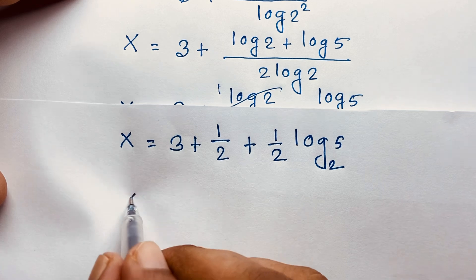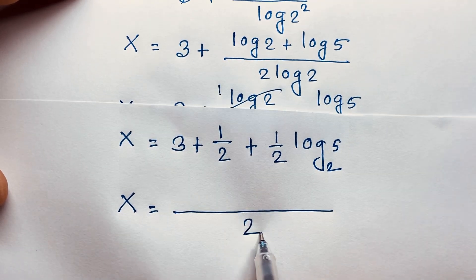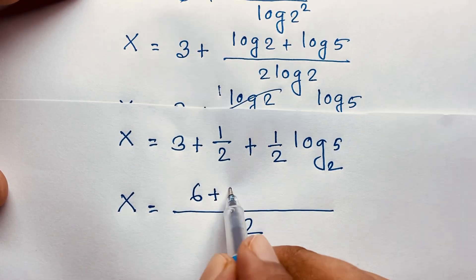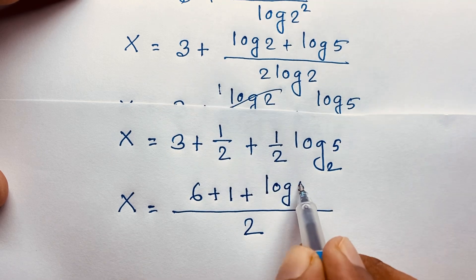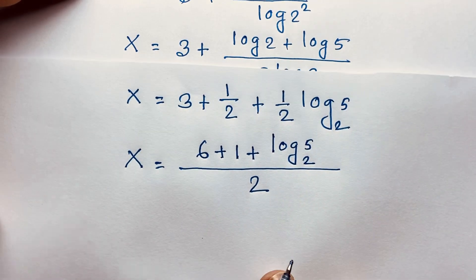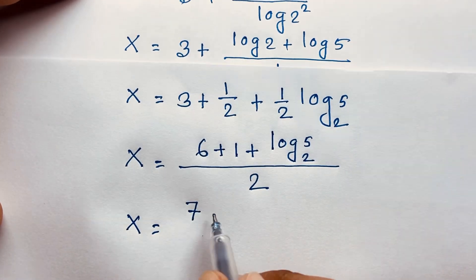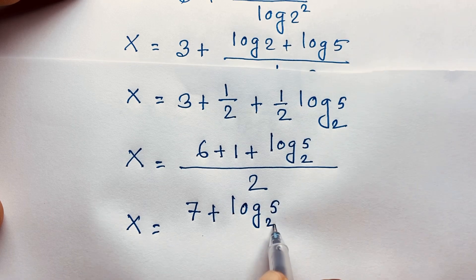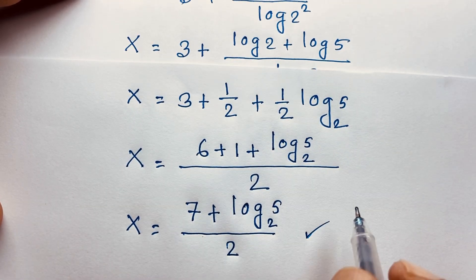Taking the common denominator of 2, x equals 6 over 2 plus 1 over 2 plus log 5 base 2 over 2, which gives x equals 7 plus log 5 base 2, all over 2. This is our final answer to this exponential math Olympiad question.